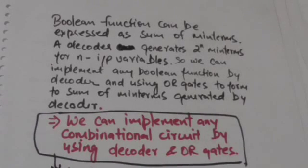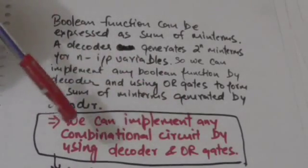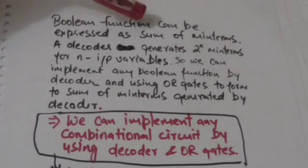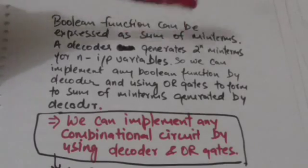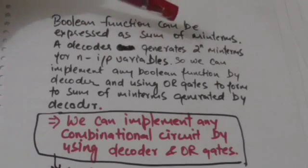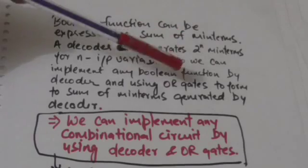Hello friends, welcome back. In this tutorial we will study how we can implement any combinational circuit by using a decoder and OR gates. We know that boolean functions can be expressed as sum of minterms, and a decoder generates 2 raised to the power n minterms for n input variables.